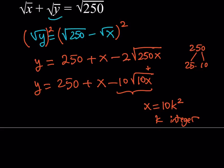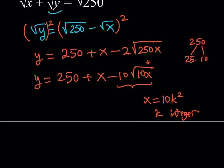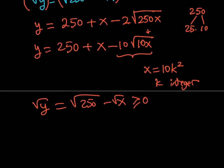If you go to the equation where we isolated the square root of Y, notice that square root of Y is equal to the square root of 250 minus the square root of X. Obviously, the square root of Y is greater than or equal to 0 all the time, which means this expression is greater or equal to 0, which means the square root of X is less than or equal to the square root of 250, right?